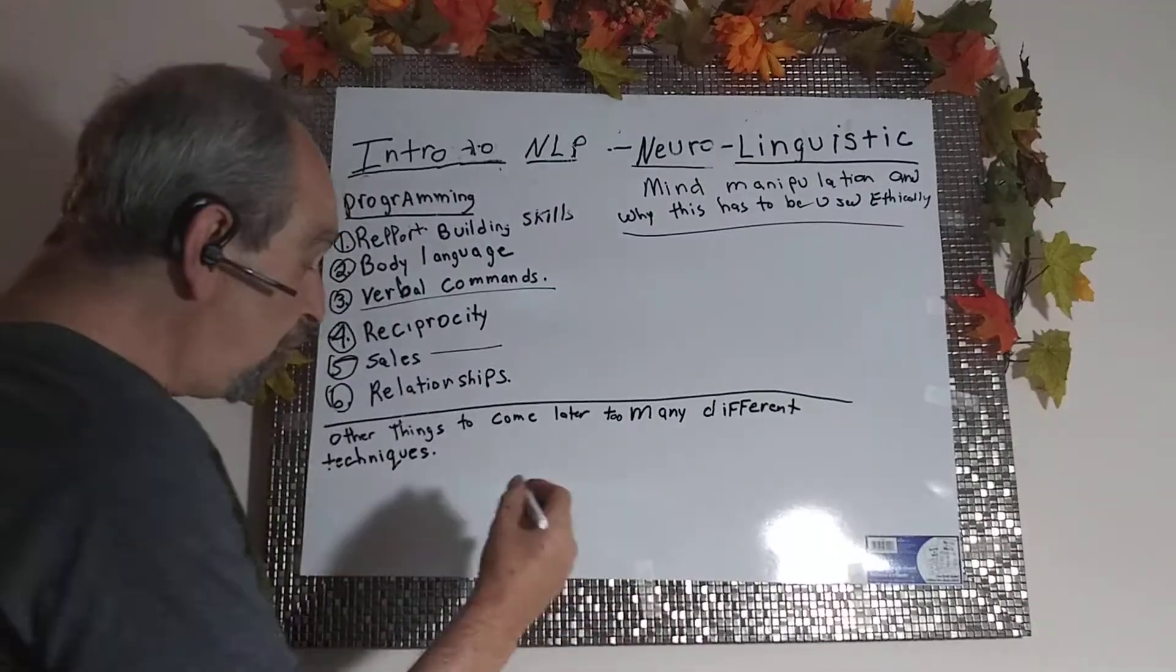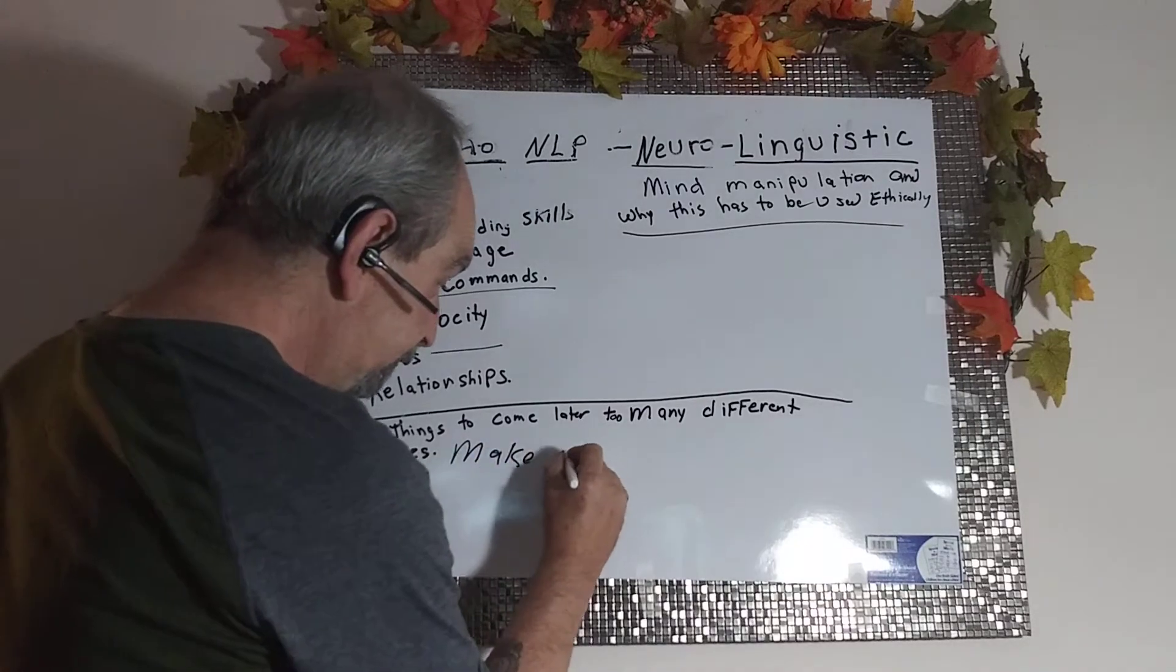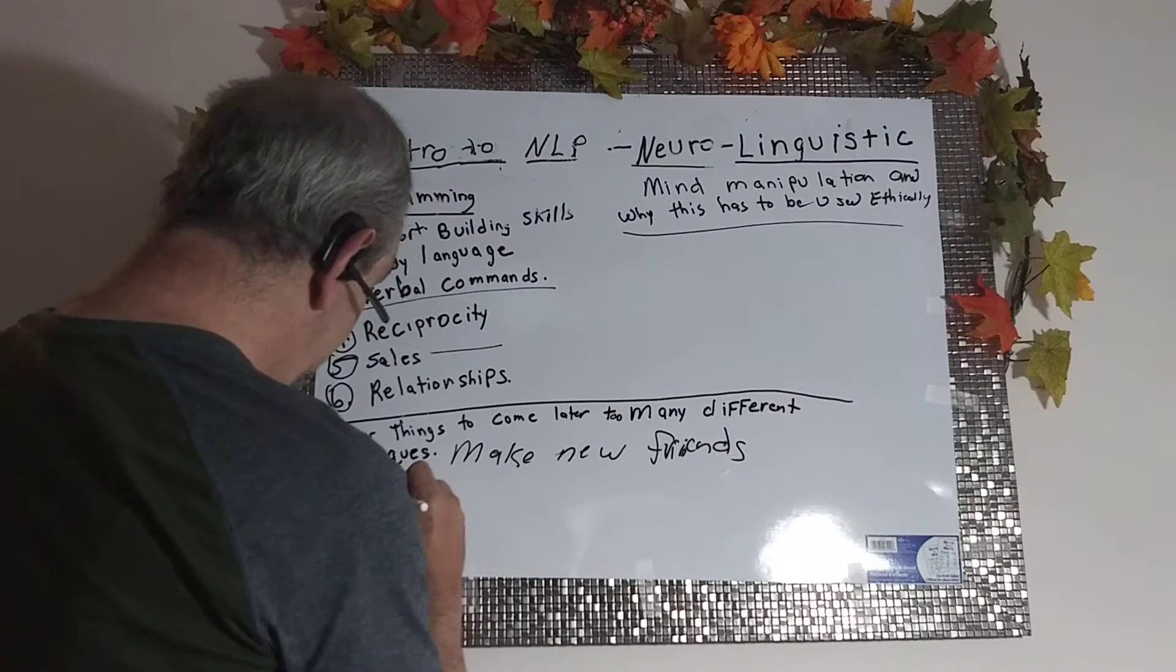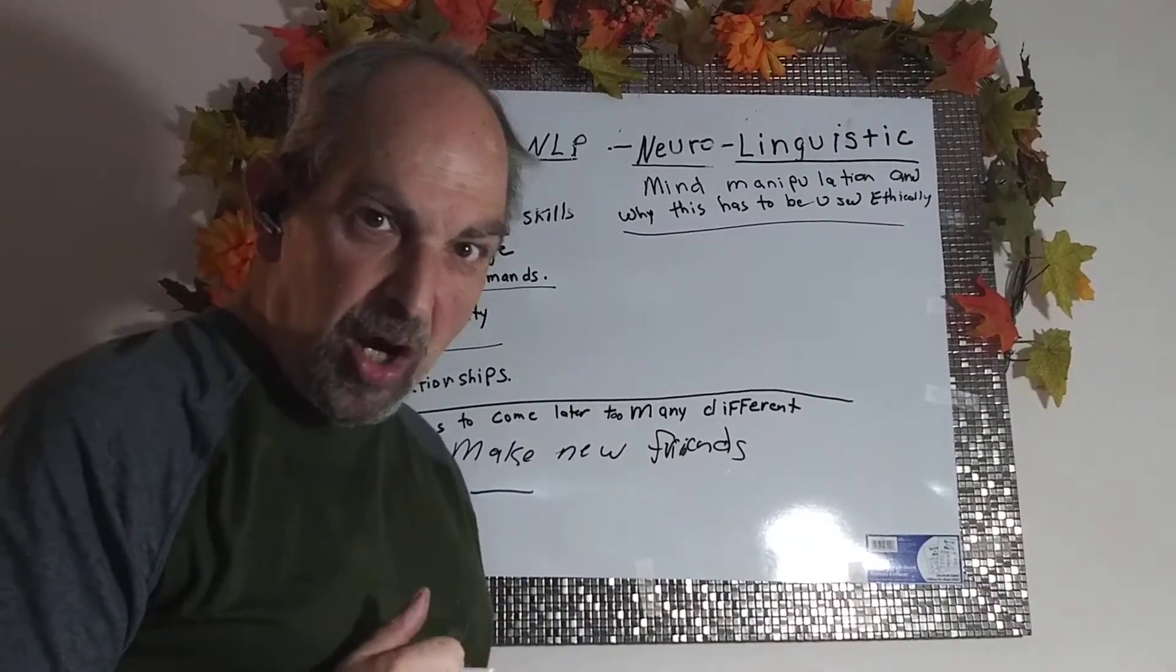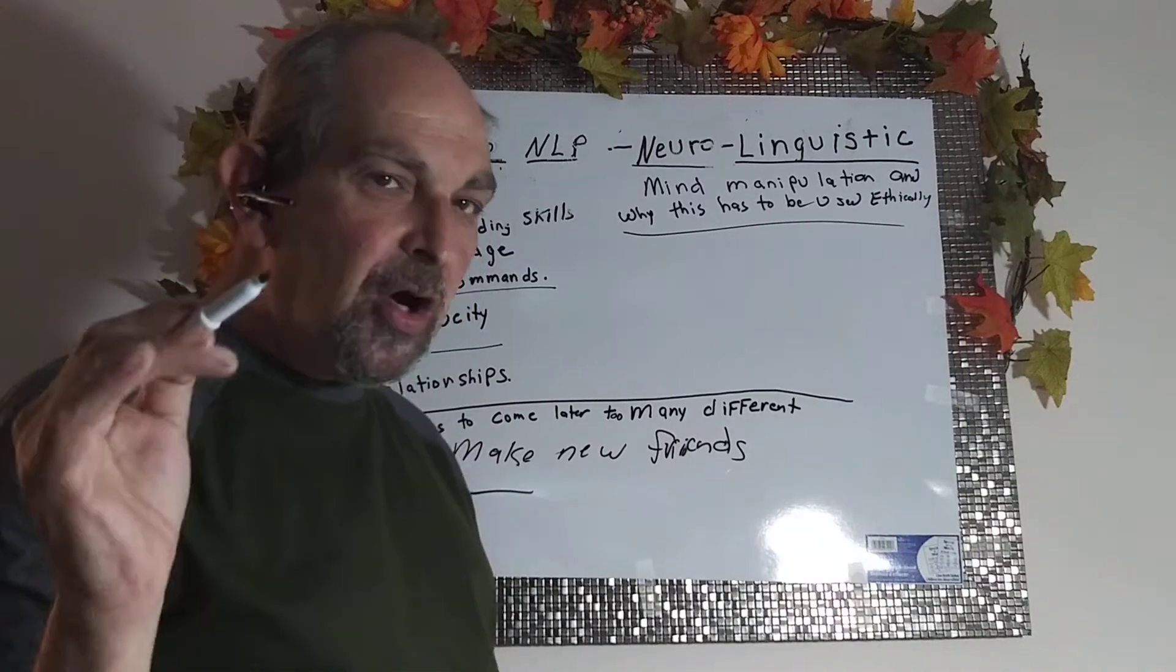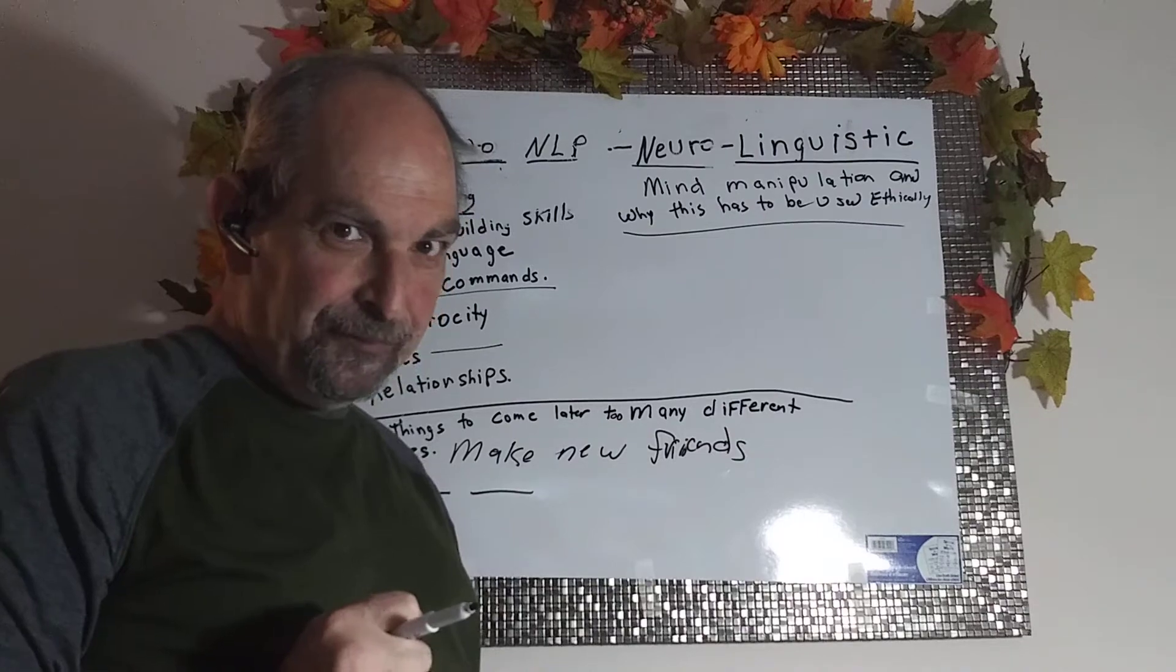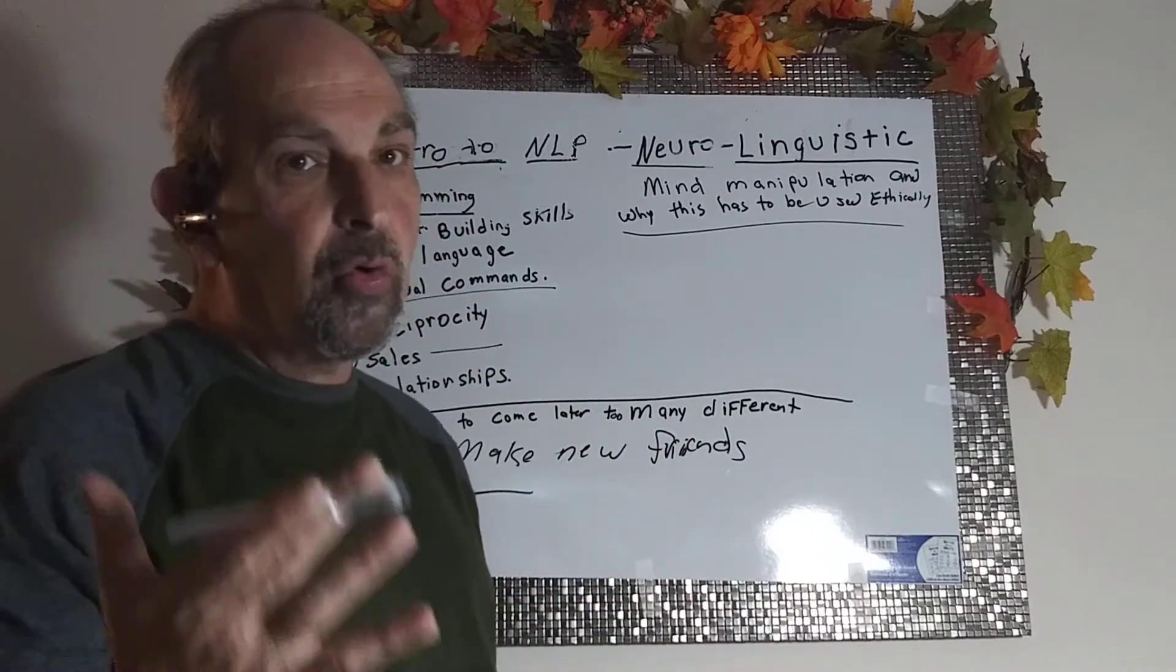I mean, these are the things you want to do. You want to make new friends. You want to meet, you know, men, women. You want to get the job that you want. You want the promotion that you want. In order to do that, you have to know how to get into a person's mind. That's what NLP basically is, is you're getting into other people's minds. Now, what you decide to do with that is completely up to you. That's where this ethical rule comes in.